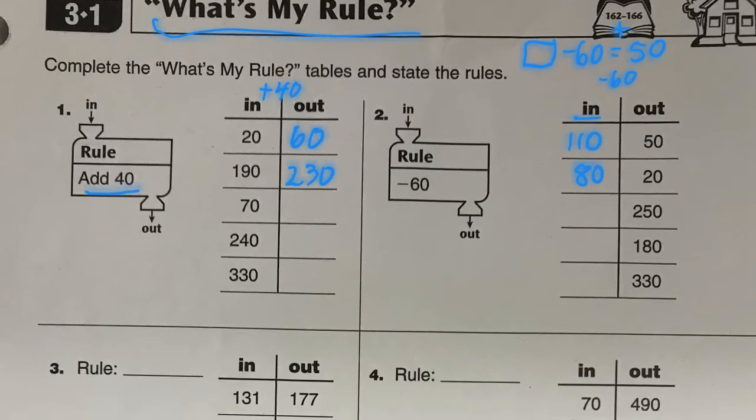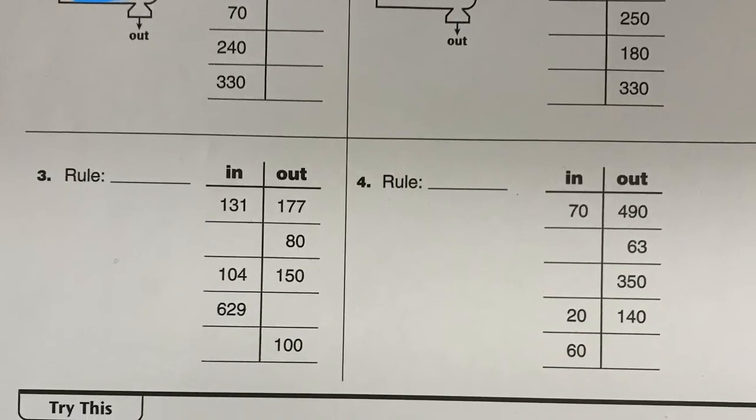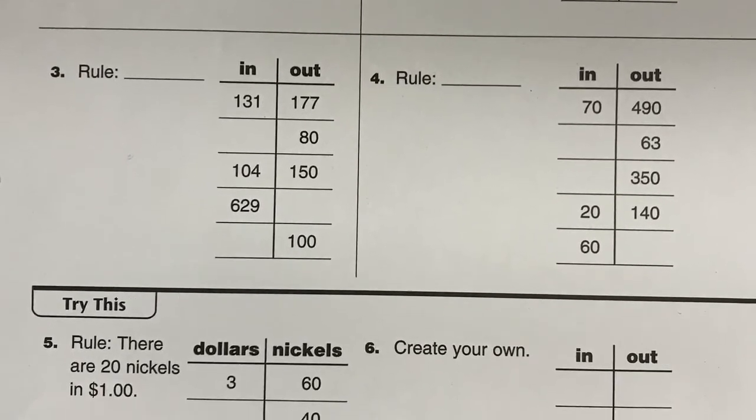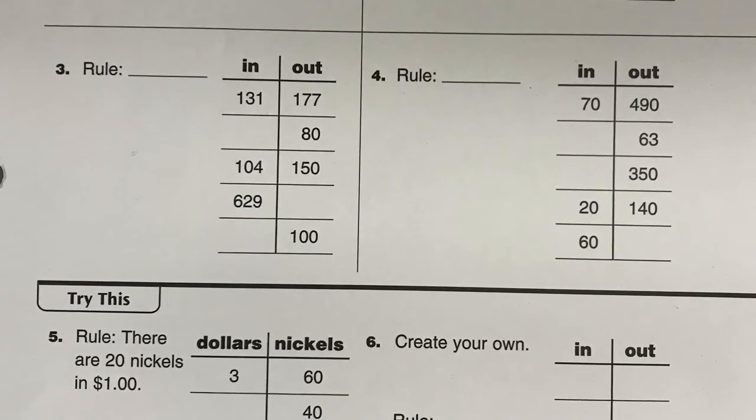The next bit here, we need to figure out the rule. Let's have a look. They've given us two examples. This one goes from 131 to 177. Looks like we're adding something here. So what would I add to 104 to get to 150? Well, the answer is I would add 46, I think.